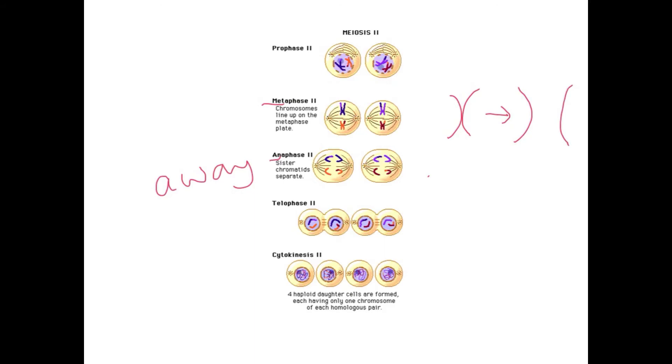In telophase, we can see now that we're starting to form four completely different cells. As the nuclear membrane reforms, the cytoplasm starts to pinch. In cytokinesis, we have four daughter cells, haploid, so they only have 23 chromosomes instead of 46. They have one of these chromosomes from our original X. And each one of them will be different due to the process of crossing over that's taken place and the recombination of genes.